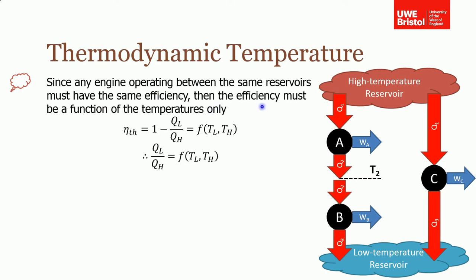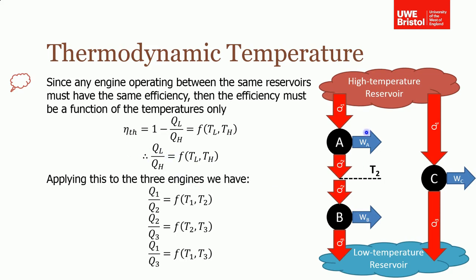If you draw a box around heat engines A and B, you can see that heat engine C must take Q1 and reject Q3, because it's operating between the same reservoirs as A and B combined — so the output must be the same. Recall that the thermal efficiency of a heat engine equals one minus the ratio of heat out over heat in. We know the heats are a function of temperature, but we don't know what that function is yet, so we write it in a generalized sense: the thermal efficiency is a function of the temperatures of the two reservoirs.